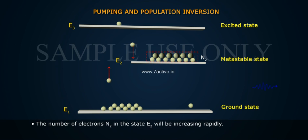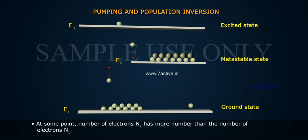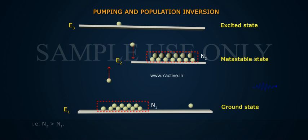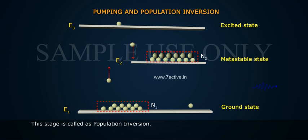The number of electrons N2 in the state E2 will be increasing rapidly. At some point, number of electrons N2 has more number than the number of electrons N1. That is, N2 is greater than N1. This stage is called as population inversion.